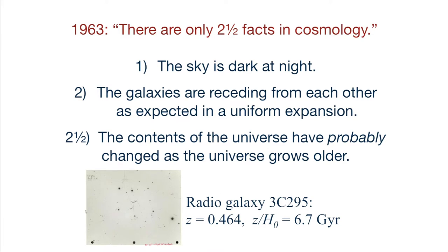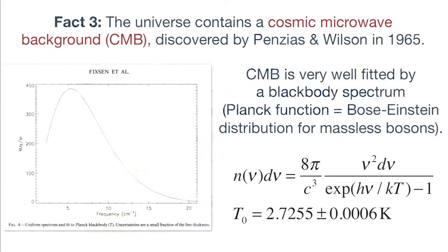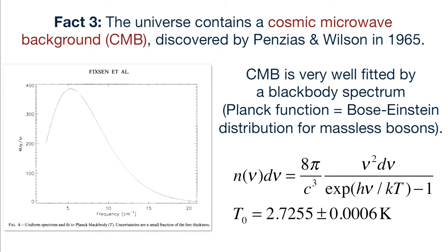This was only a half a fact in 1963 because at that time radio surveys of active galactic nuclei and quasars were only just beginning to get sensitive enough to measure high-redshift galaxies, so the statistics weren't yet very firm. The half fact wasn't elevated to a full-fledged fact until the discovery of the cosmic microwave background by Arno Penzias and Bob Wilson in 1965.